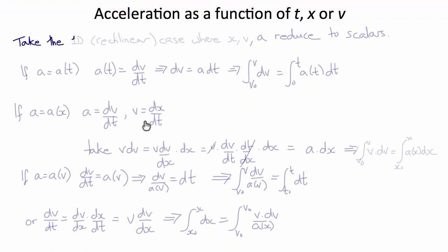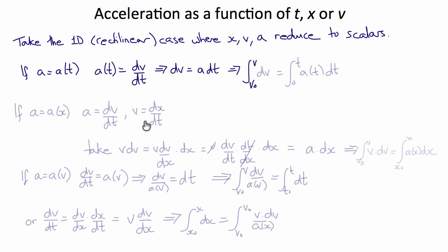Often in kinematics we solve problems for velocity and displacement by integrating an expression for acceleration. In the 1D rectilinear case, x, v, and a reduce to scalars. When a is a function of t, a(t) = dv/dt, which means dv = a dt. Integrating for velocity, the integral from v₀ to v of dv equals the integral from 0 to t of a(t) dt.